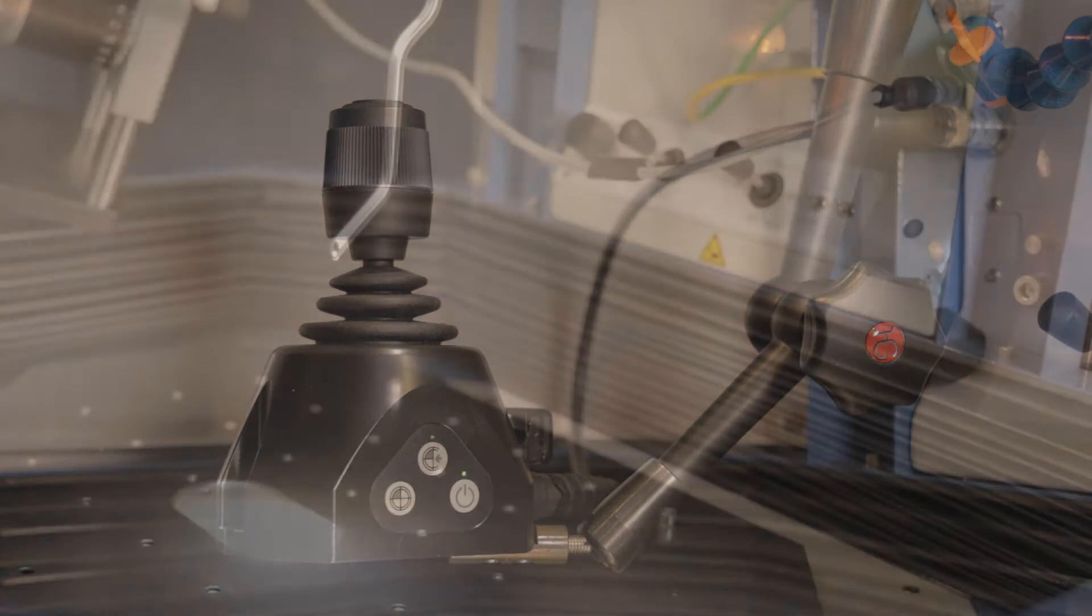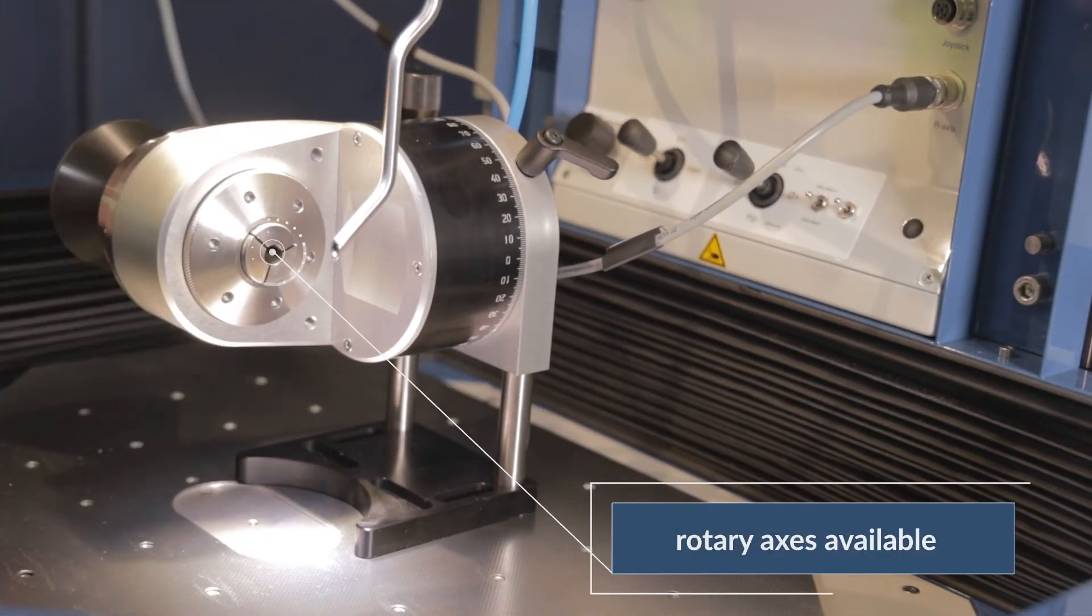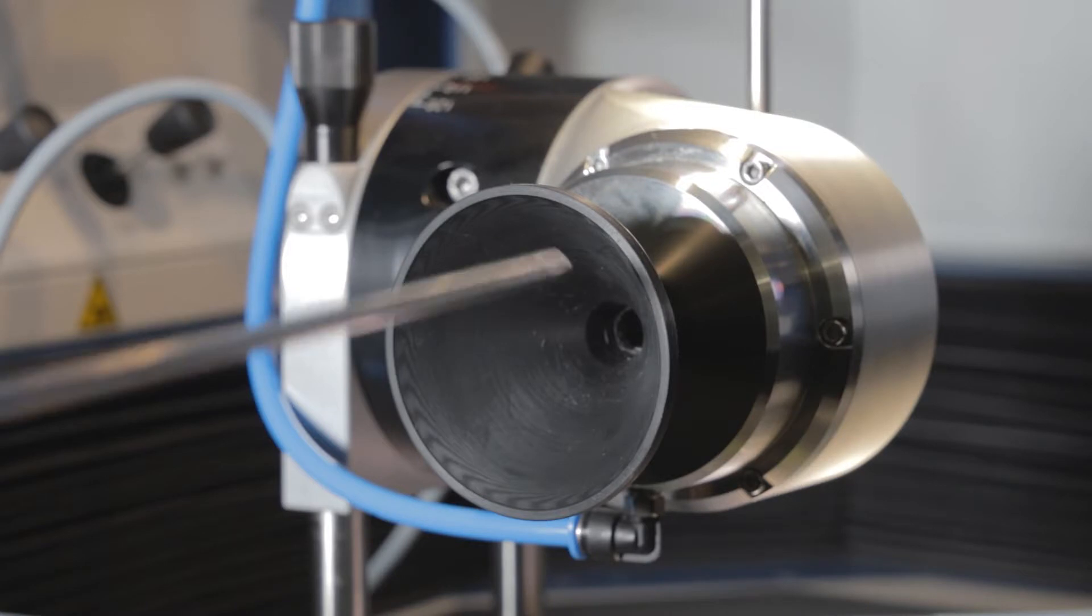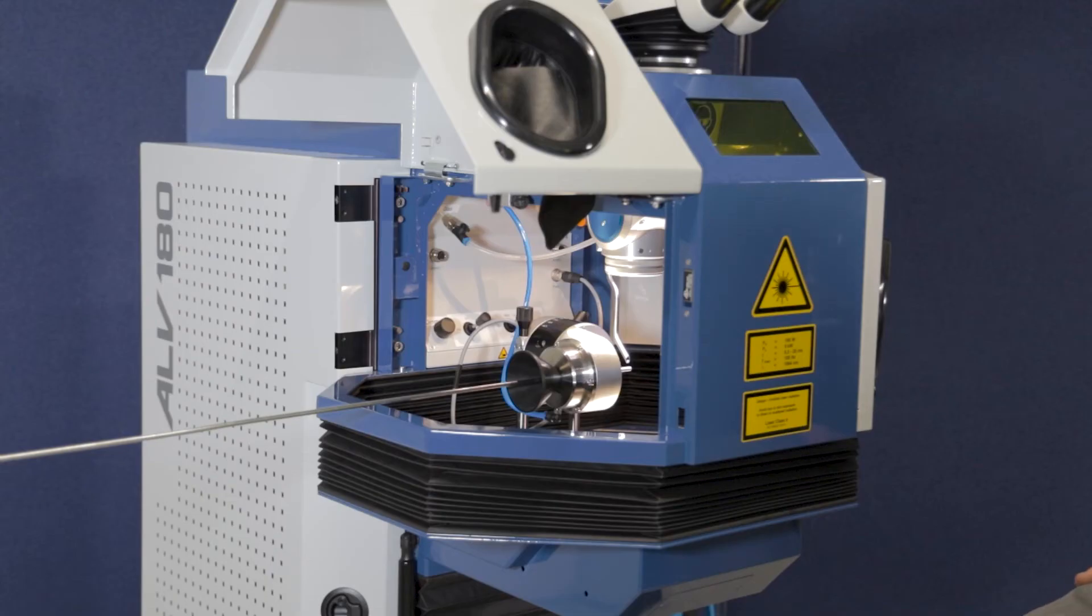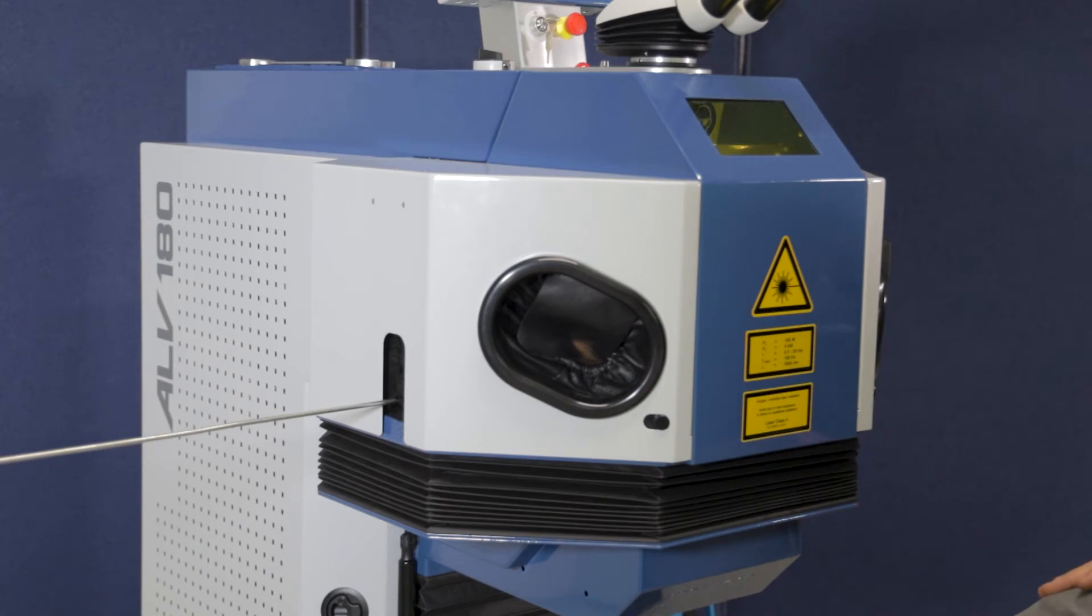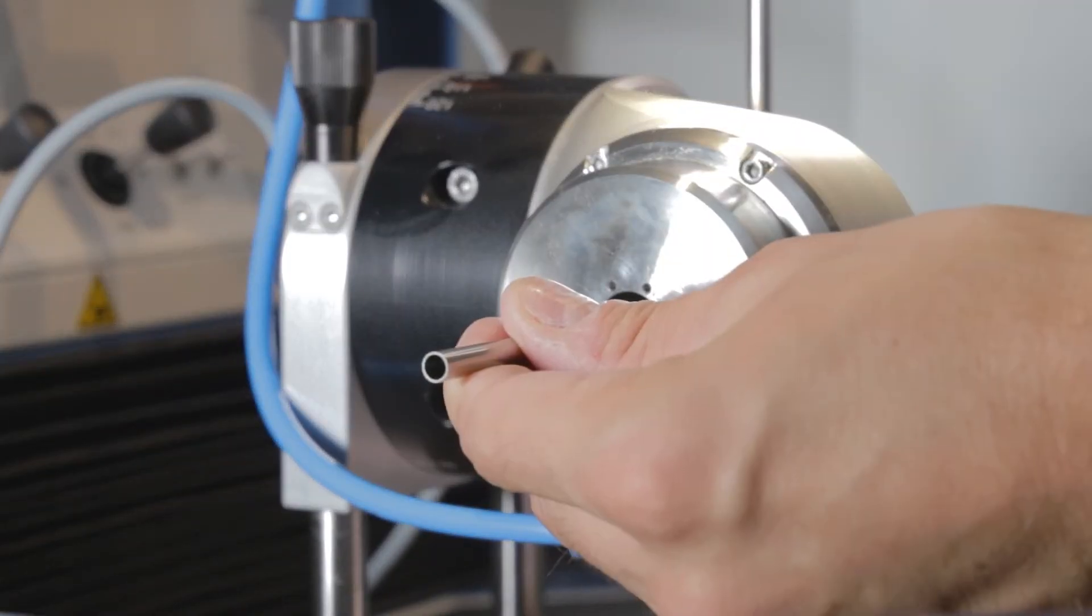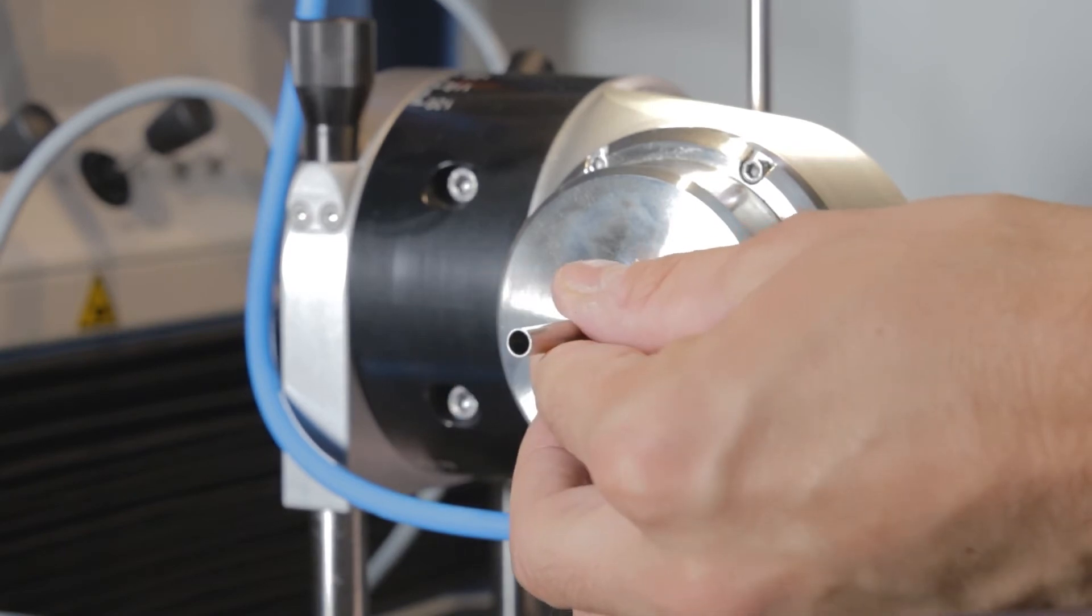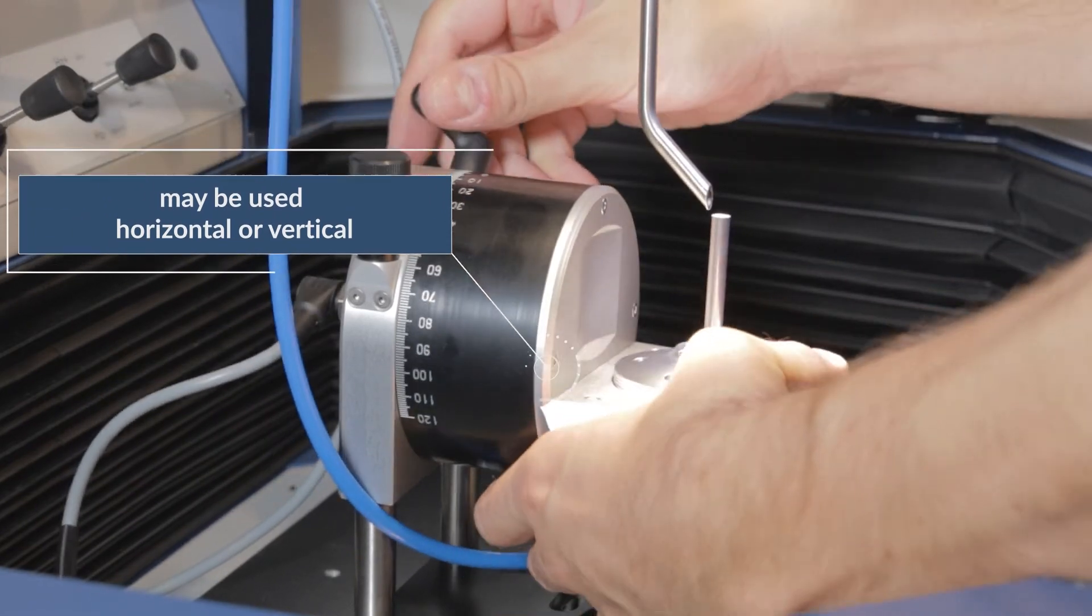For circular welding, different rotary axes for different applications are available. A funnel helps when threading in long components. The pneumatic chuck can be switched by a foot switch. The rotary axis may be used horizontal or vertical.